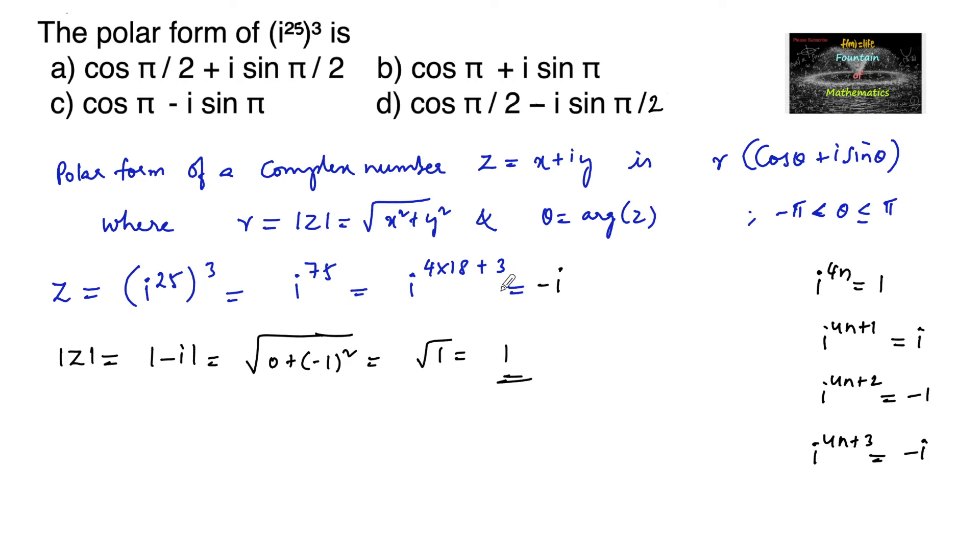And also argument of z which is equal to argument of minus i. Since we know that minus i is located on the negative y axis, minus i is nothing but 0 comma minus 1 which is on negative y axis.